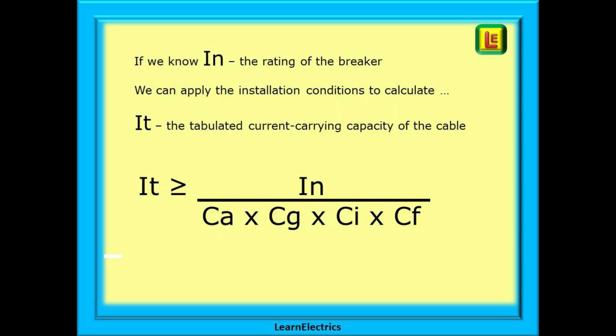Once we know IN, the rating of the fuse or breaker, we can apply the installation conditions to calculate IT, the tabulated current carrying capacity of the cable. Tabulated means that we look up this value in a table, and find a cable size that will take this value of current. The formula in the on-site guide is shown here, and includes the 4 most often used condition codes. The formulas shown in the Wiring Regulations book are basically the same, just lots more C factors.